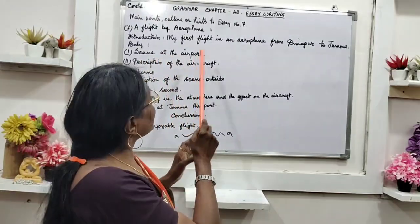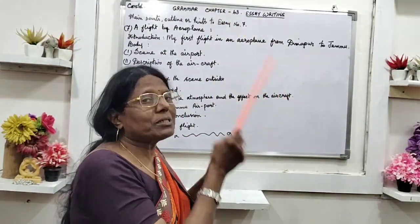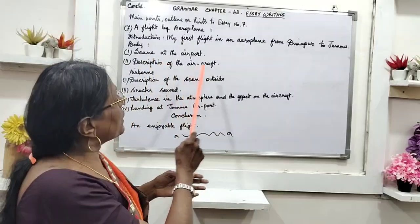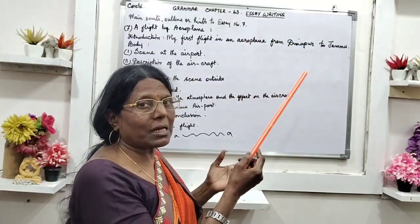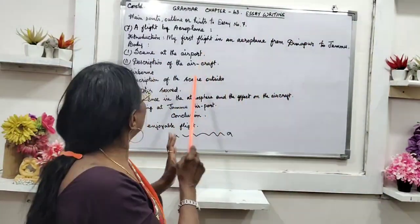Seen at the airport: when we go to the airport, all the formalities take place. Description of the aircraft: about the aircraft by which you are going to fly.